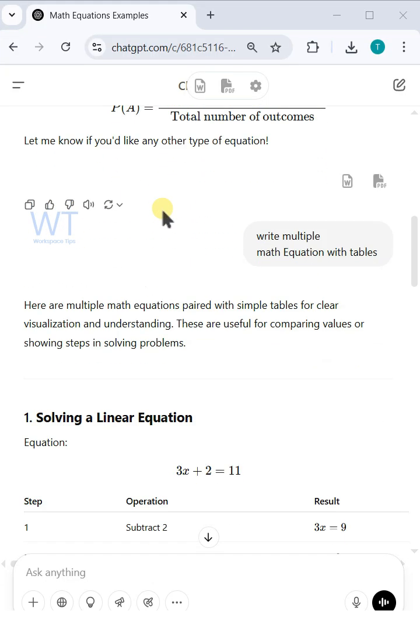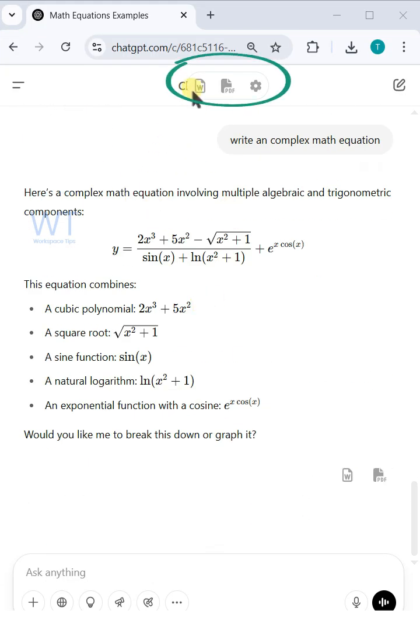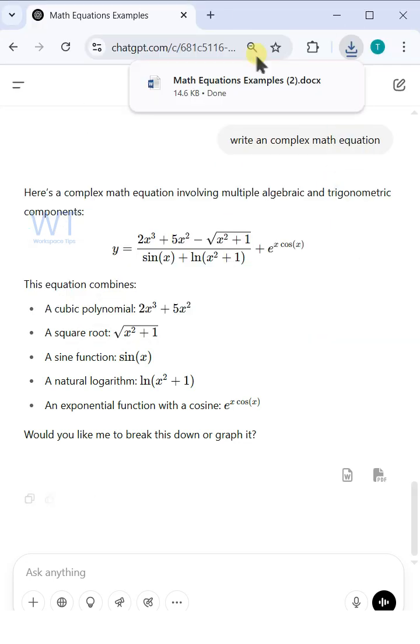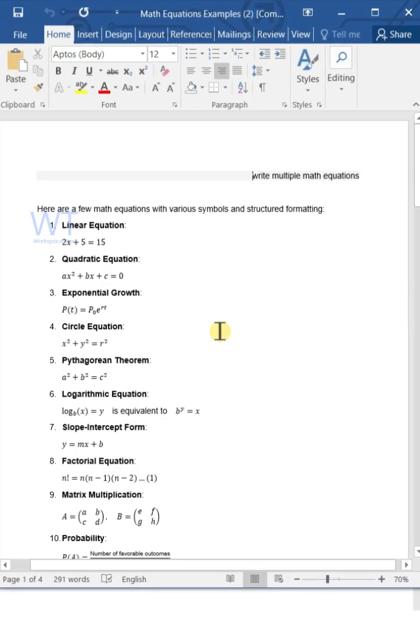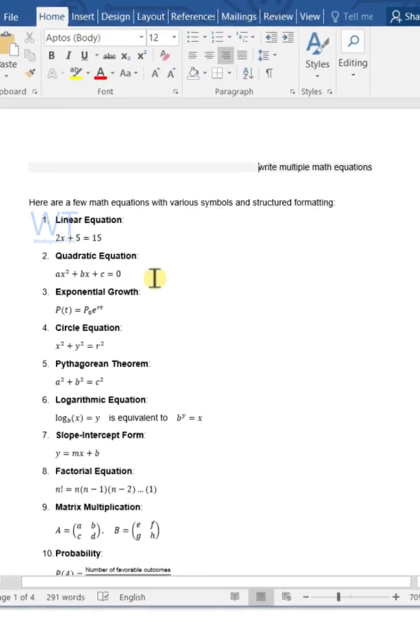Do you want to export the entire conversation as a Word file? Click the Word button at the top right corner, then open the downloaded Word file. Now you can see the entire conversation as Word perfectly formatted equations and tables, no formatting lost.